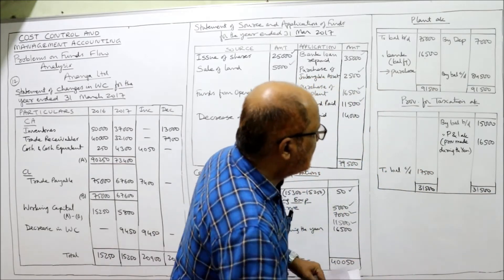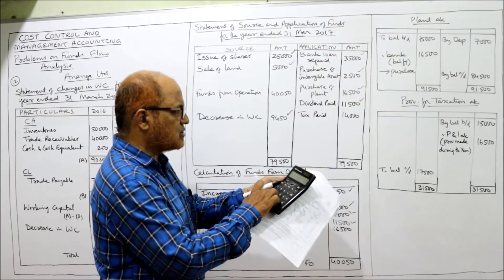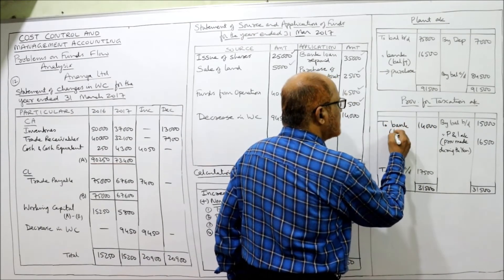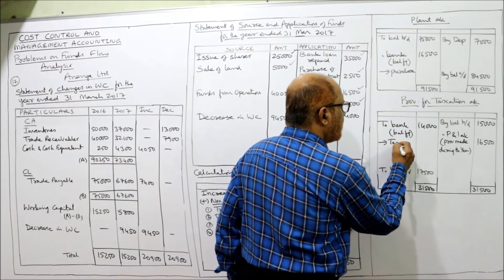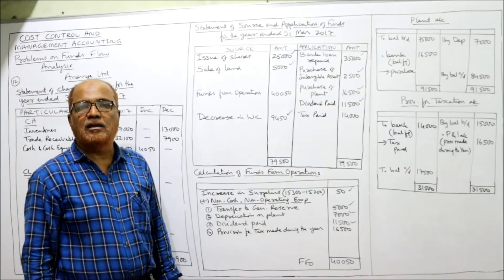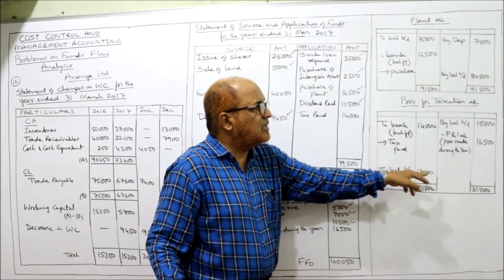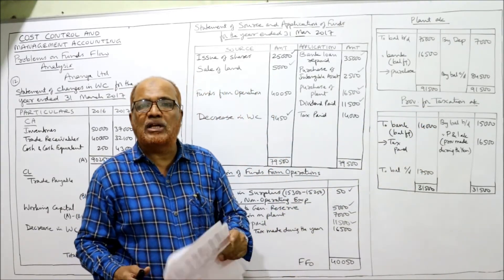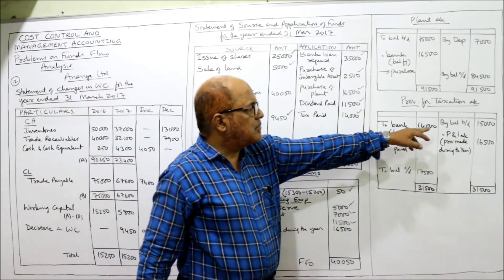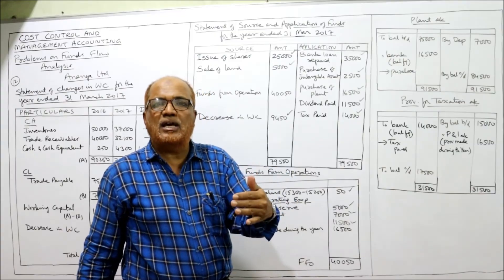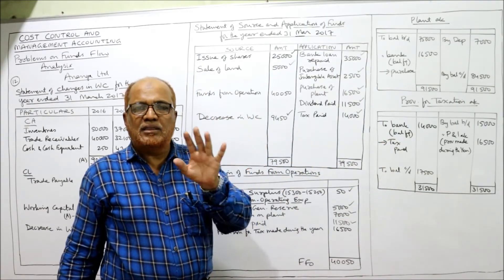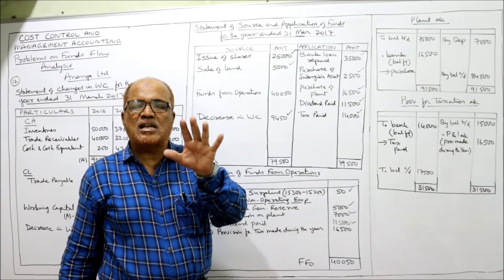From 31,500 deduct 17,500 — you get 14,000. So 14,000 is written on the debit side as 'to bank.' This balancing figure is not given in the problem; we calculate it by making this account. The debit side balancing figure represents the income tax paid during the year — 14,000. This 14,000 is taken on the application side. Remember: opening balance on credit side, closing balance on debit side, provision made during the year on credit side by P&L account, and the debit side balancing figure is the income tax paid. This is the treatment when provision for taxation is treated as an appropriation of profit.